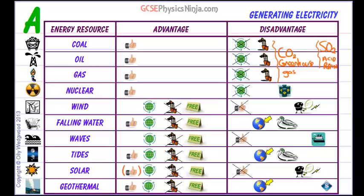Finally, geothermal energy is very expensive because drilling thousands of meters into the Earth's crust takes a lot of money and is very difficult to do. So there we are — a summary of the advantages and disadvantages of energy resources.